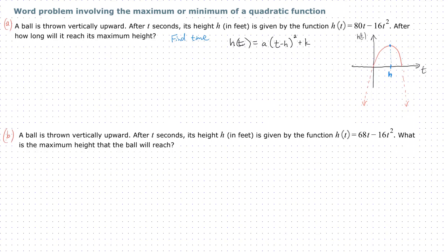Alright, let's do that. h(t) = -16, and let's see what's left. We have a t² minus 5t.